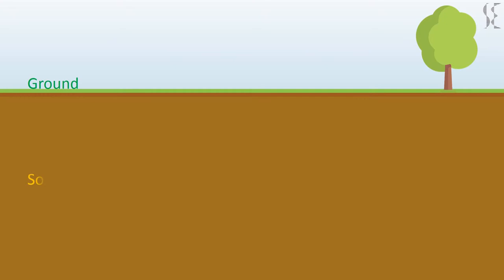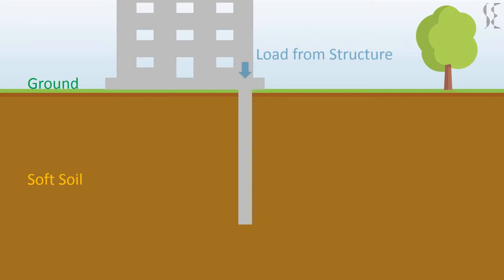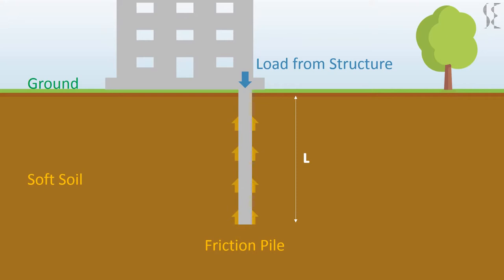For this site, pile foundation is used for building. Assume a single pile for representation purposes only. The load from the structure will be passed to the ground via friction piles. Friction or shear forces between soil and pile foundations keeps the building standing still. If the length of the pile is not sufficient enough to resist the building forces, then the foundation will fail.